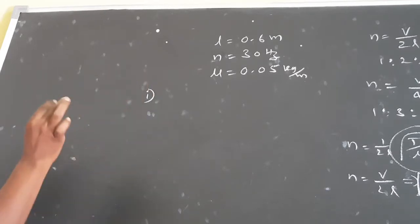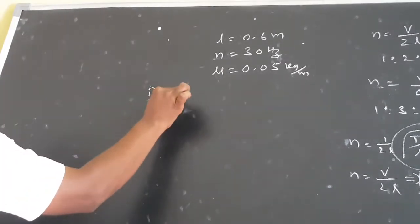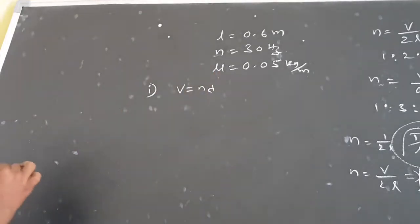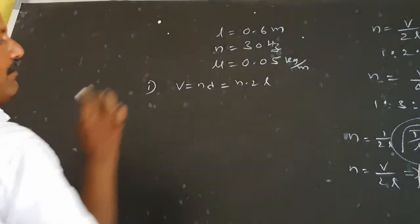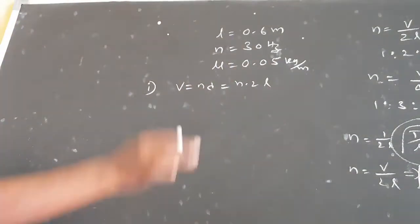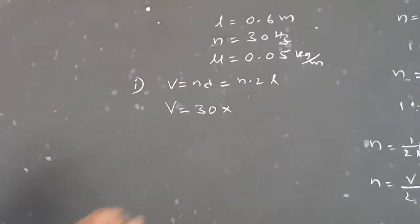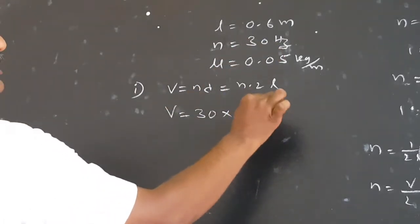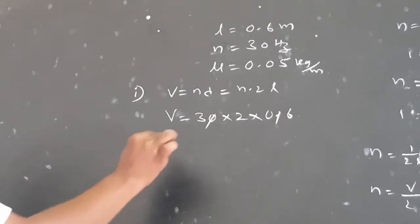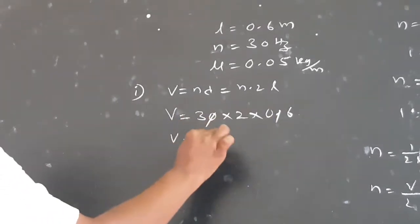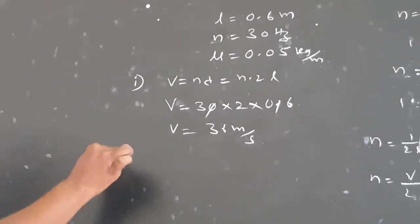First, we find the velocity. V is equal to n lambda. In a stretched string in fundamental mode, lambda is equal to 2L. Substituting the values: V is equal to 30 into 2 into 0.6, which gives V equal to 36 meters per second.